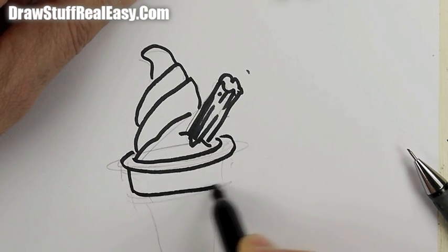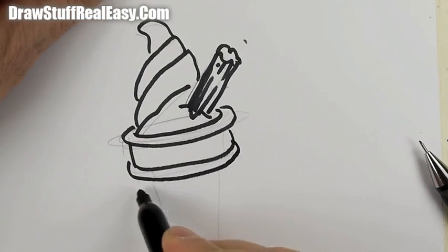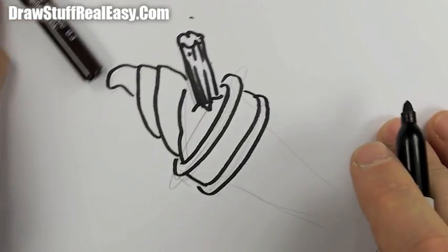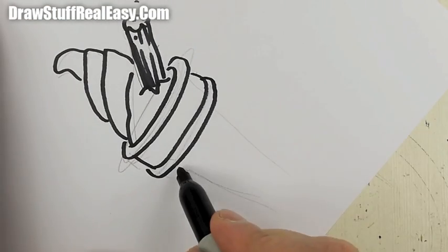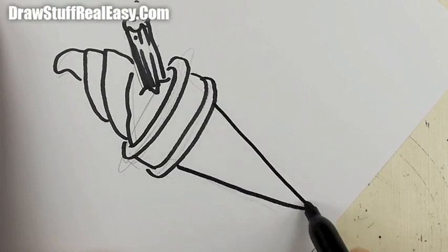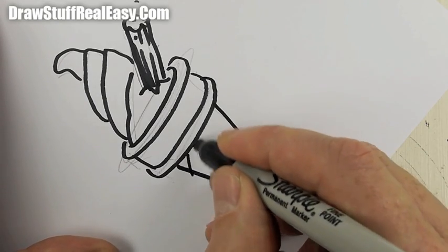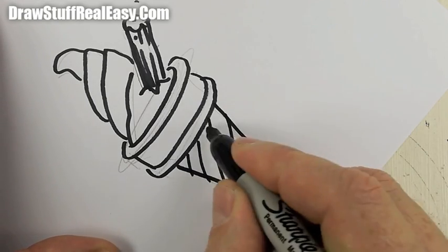Draw that round there, that down there. Am I going to fit this all in? I'm going to start drawing this sideways. Draw your cone coming down like that, and then you're going to want to put that criss-cross pattern there.